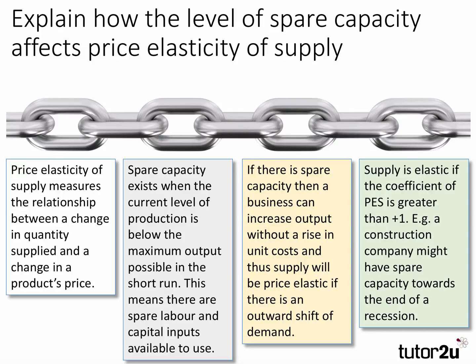Supply is elastic if the coefficient of price elasticity of supply is greater than one. For example, a construction company might have spare capacity towards the end of a recession — spare land, spare labour, spare stocks of cement and bricks — and could quite easily increase their output of new homes and shops if there was an increase in demand. The key is a clear causal connection between spare capacity and the speed and ease with which a business can increase production.